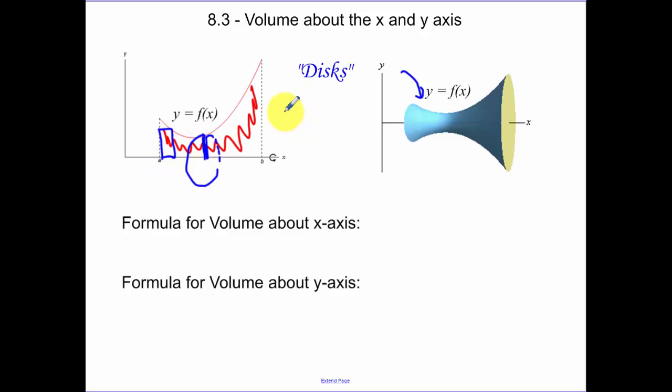What's the formula for area of a circle? That's pi r squared. But what is r? R is our function value. So to find volume about the x-axis, our volume is pi times the radius of our function squared, and that's from values of A to B.